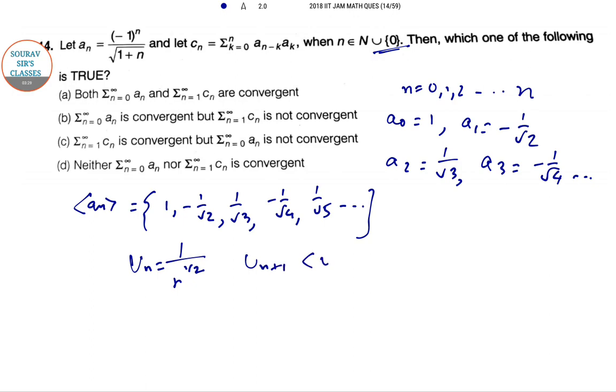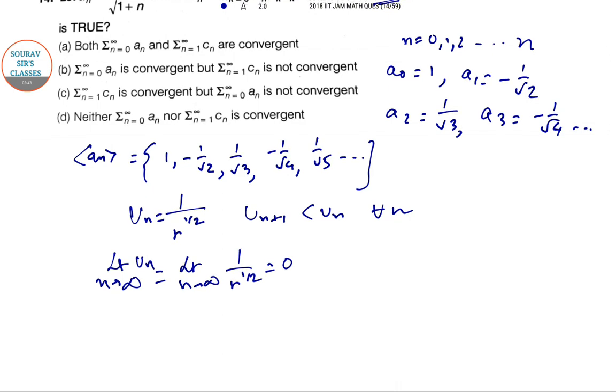So u_n plus 1 less than u_n for all values of n and here if we form the limiting structure and for limit n tends to infinity, u_n equal to limit n tends to infinity, 1 by n to the power half equal to 0.